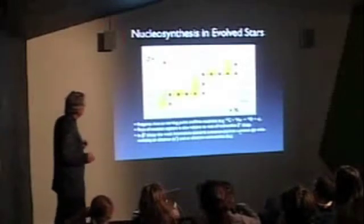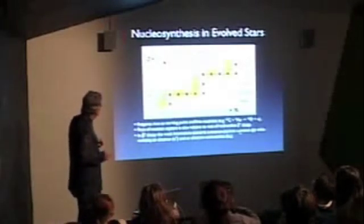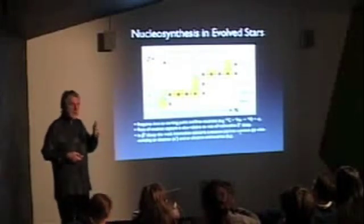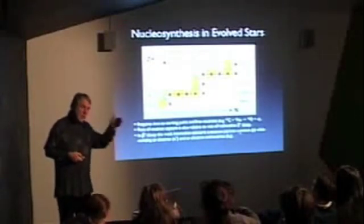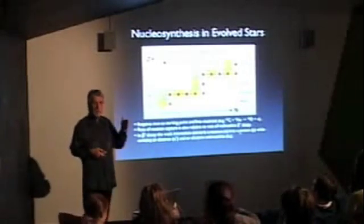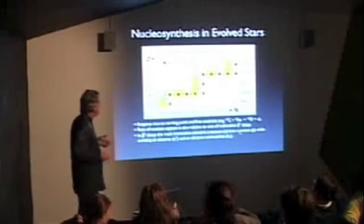There's another process. But neutrons get captured by some of these nuclei and they create the elements in between those gaps so that all the elements up to iron and nickel get formed in these big stars.